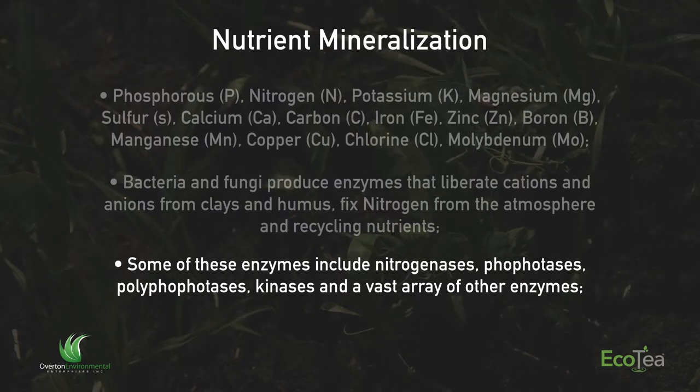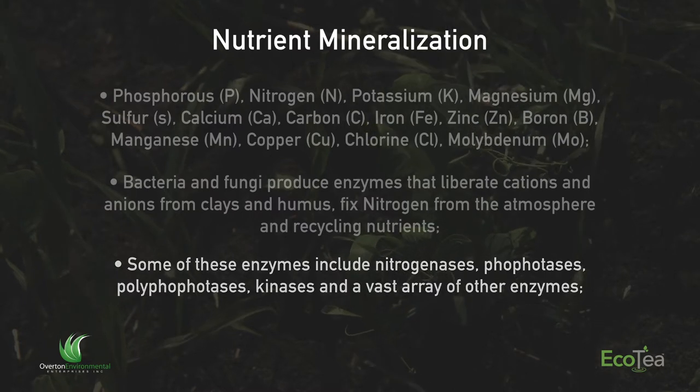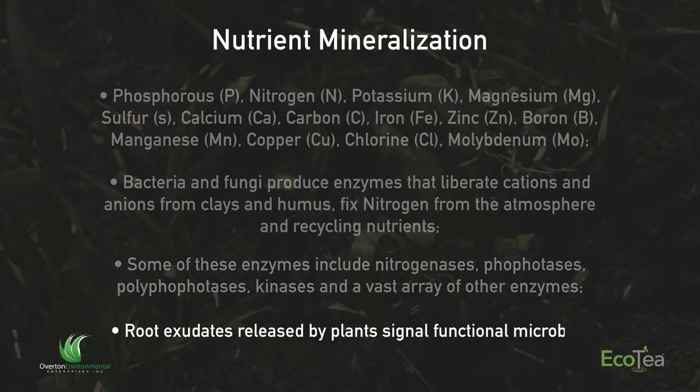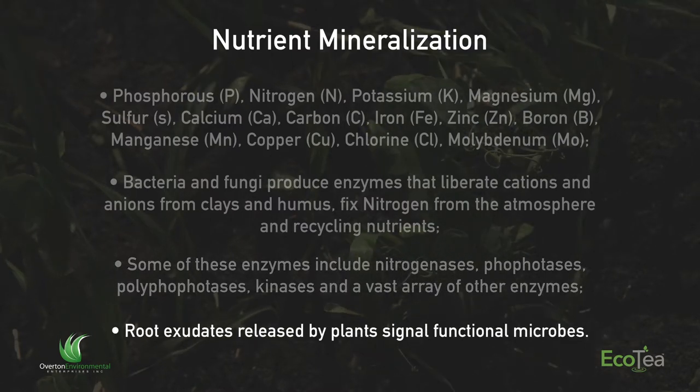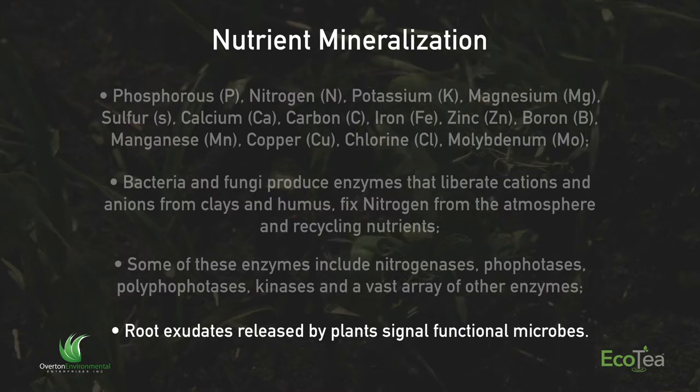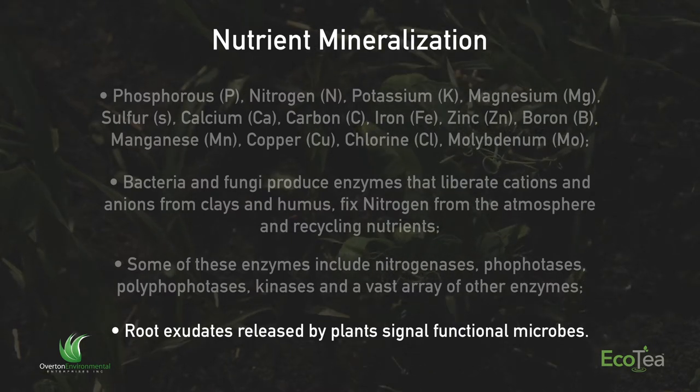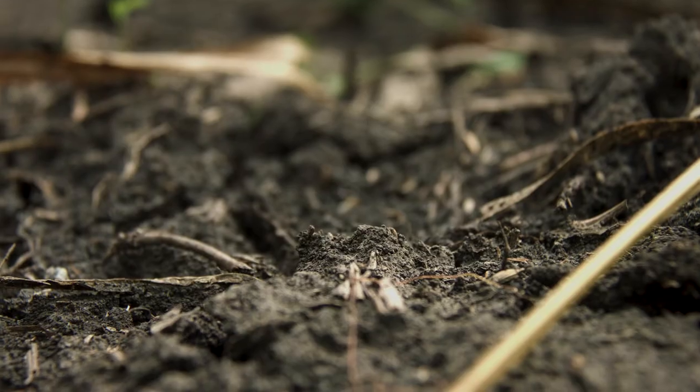What's really cool is microbes will be stimulated by exudates released by plants. For example, if a plant says it needs a boost in phosphorus, it will actually send out an exudate that will target a phosphorus-liberating mycorrhizal fungi or bacteria. It's a really dynamic system — the plant is communicating with the microbes in all sorts of different ways through the release of exudates.